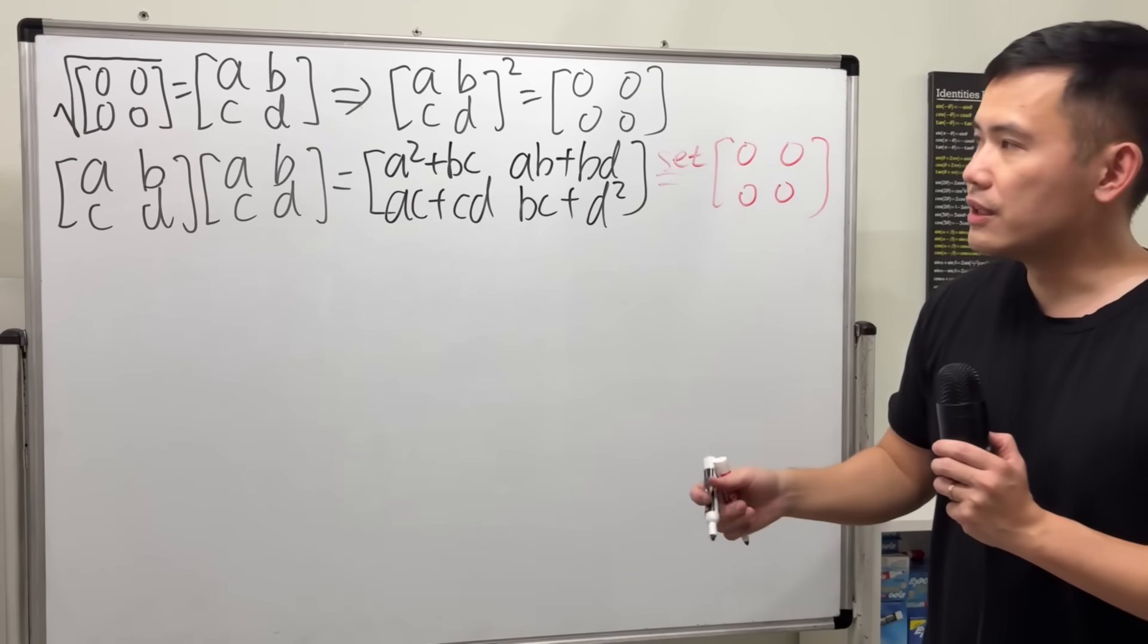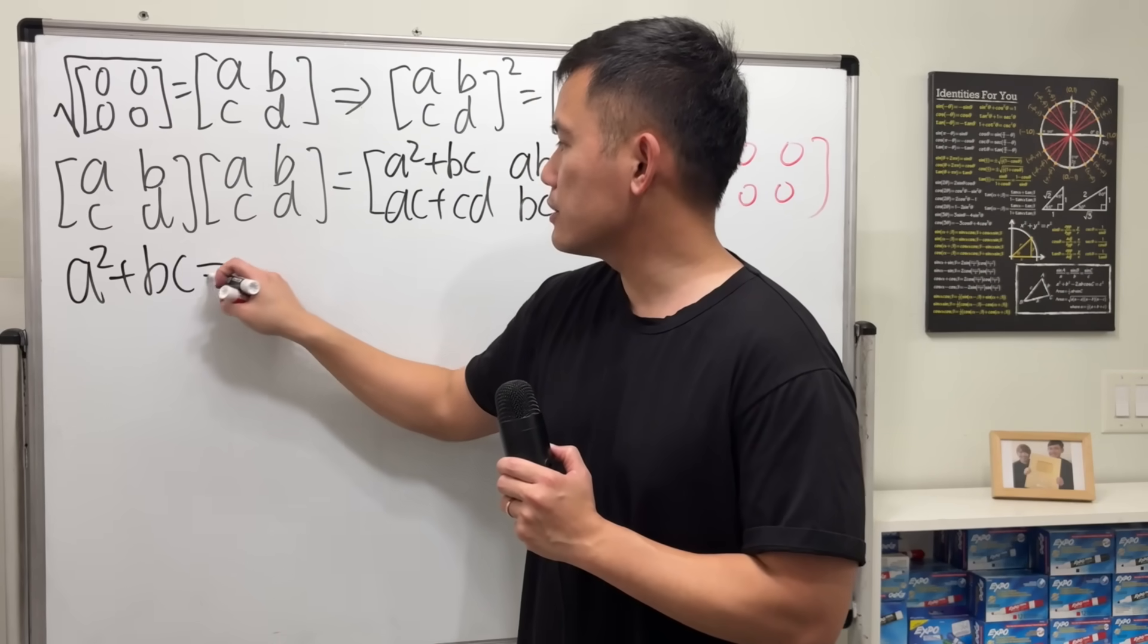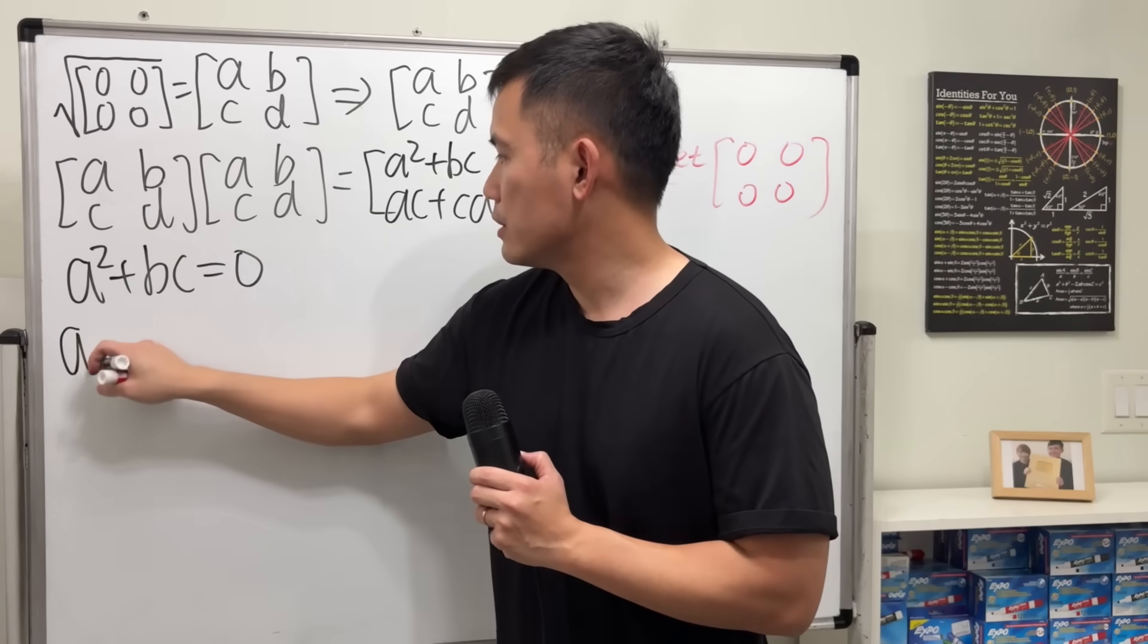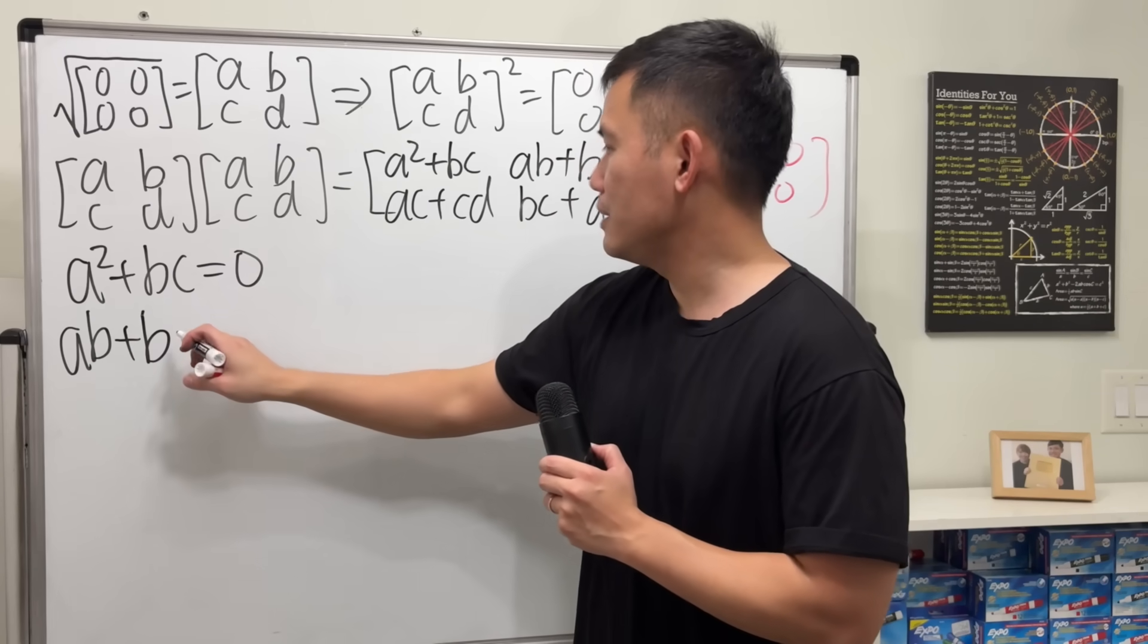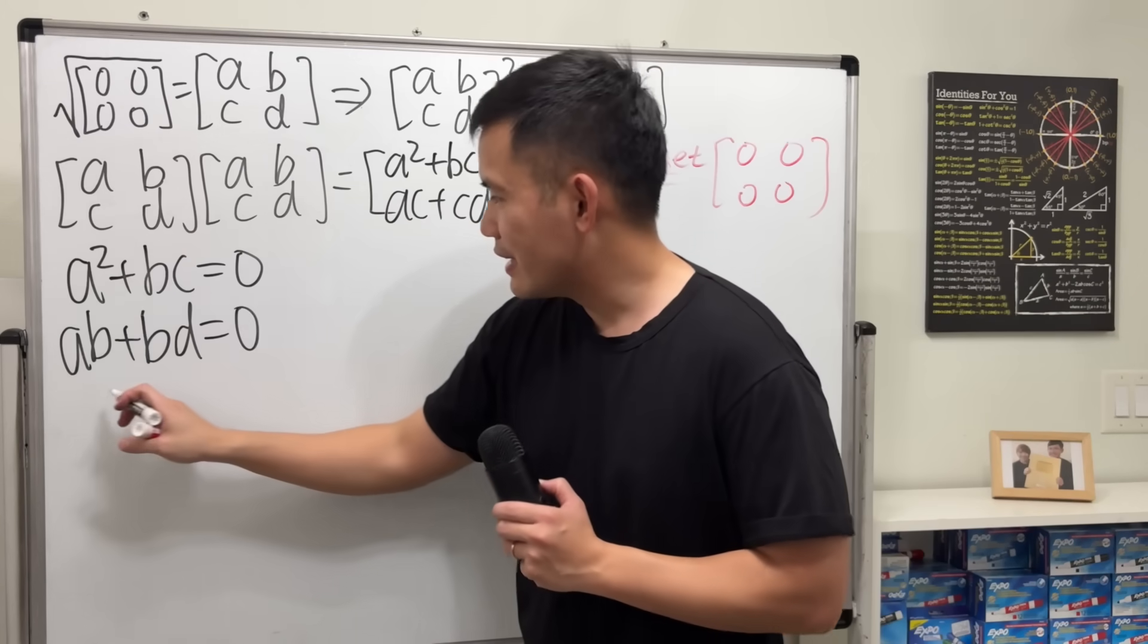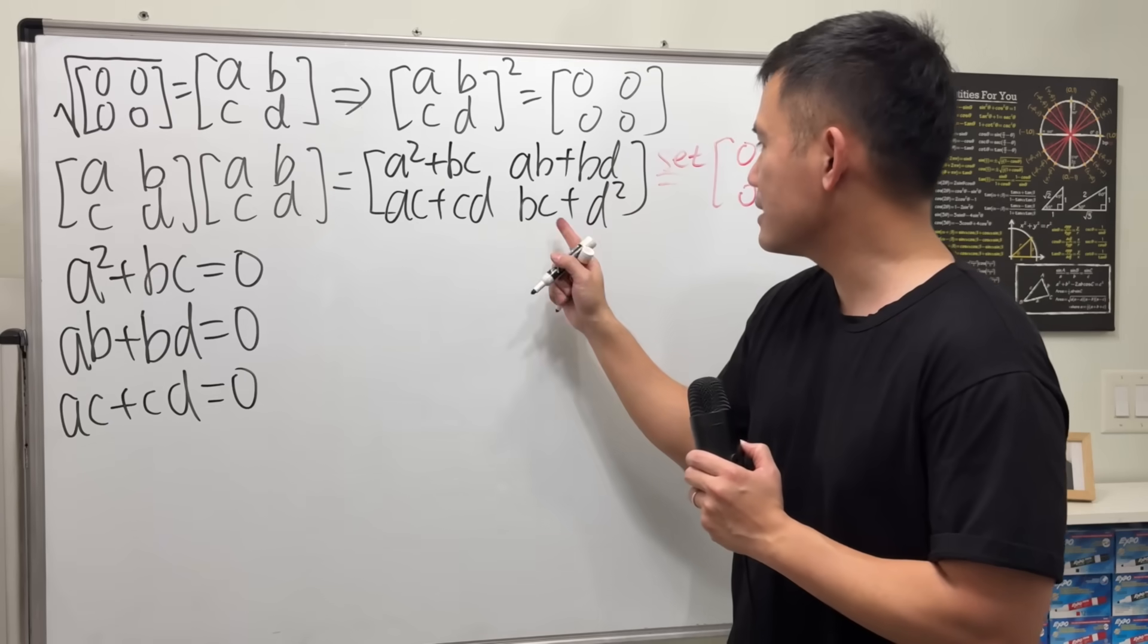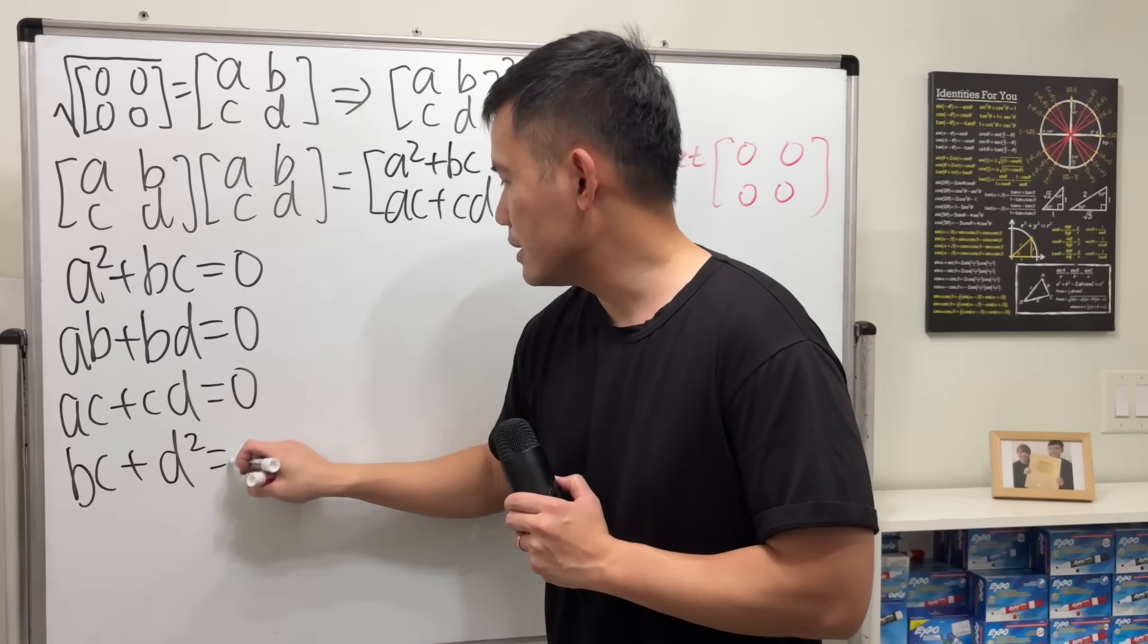Okay, so we want to make this [0, 0; 0, 0]. And here we just have to make all the entries equal to 0. So we have conditions. The first one is a squared plus bc has to be 0. And then the next one is this equal to 0. So ab plus bd is equal to 0. And then continue, this right here, ac plus cd, make it equal to 0. And then lastly, bc plus d squared is equal to 0.